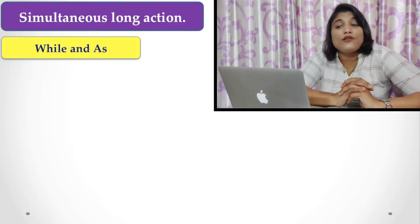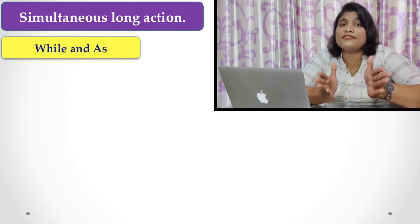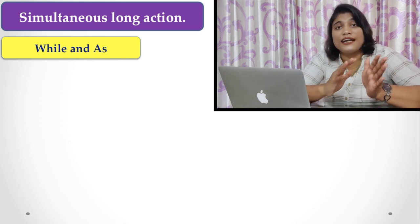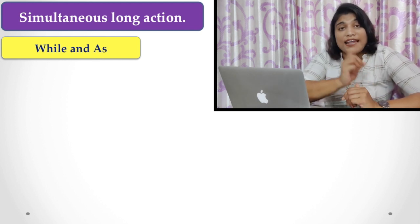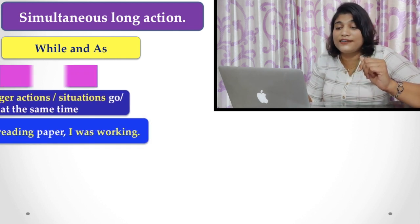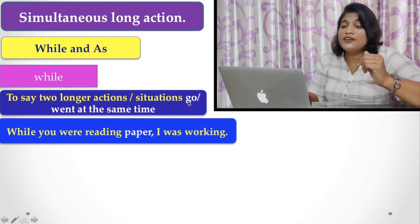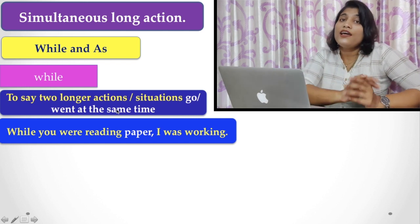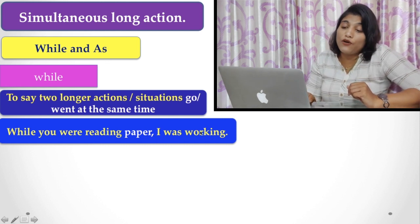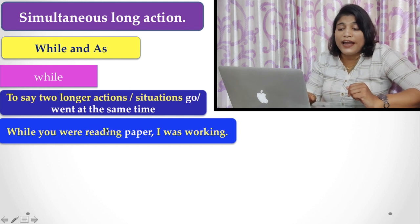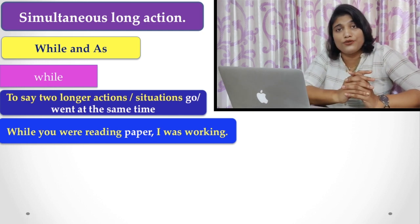Now, simultaneous long action. When you are talking about a simultaneous long action — that is, two actions are taking place and both are continuous — you have to use while. For example: 'While you were reading the paper, I was walking.' Both actions are longer ones, so you use while. For as, when you talk about two situations which develop or change together, you use as. For example: 'As I get older, I get more optimistic.' Both are developing situations, so you use as instead of while.